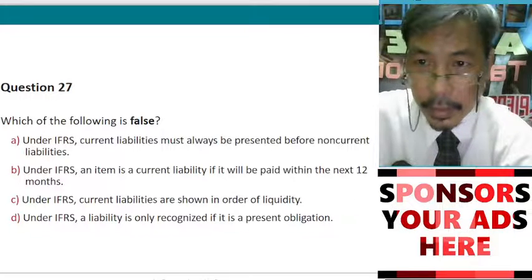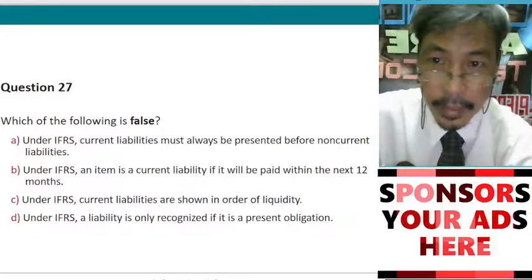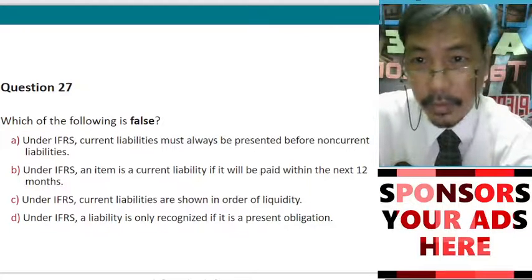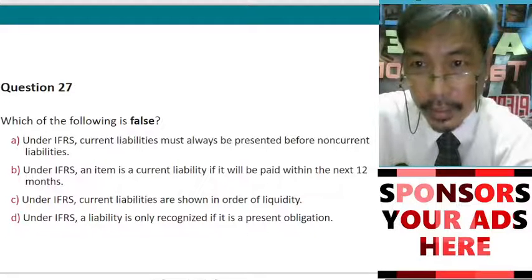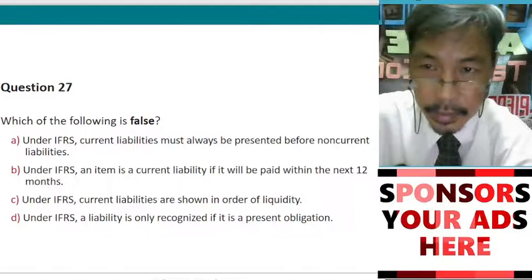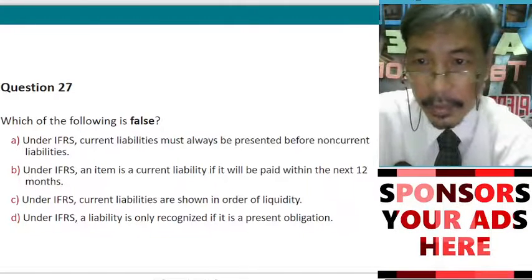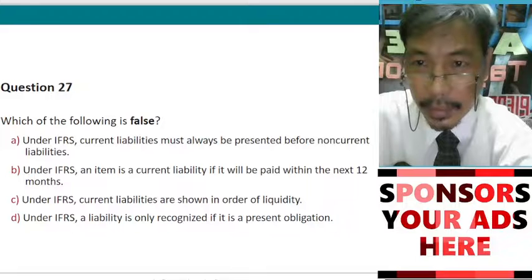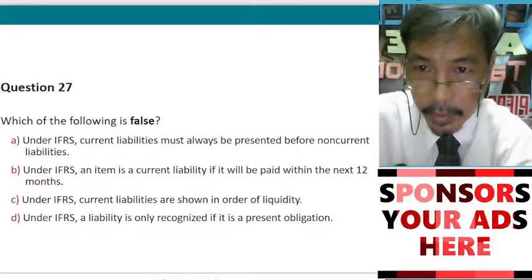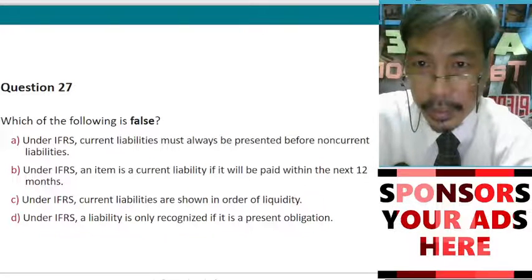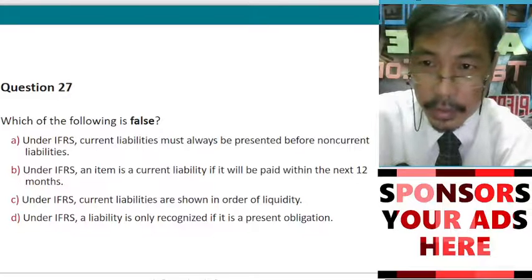A. Under IFRS, current liabilities must always be presented before non-current liabilities. B. Under IFRS, an item is a current liability if it will be paid within the next 12 months.